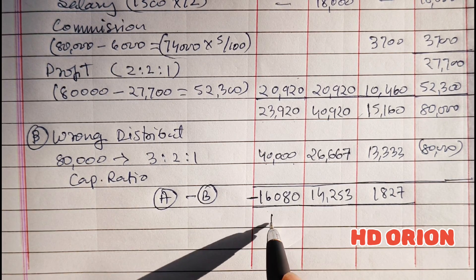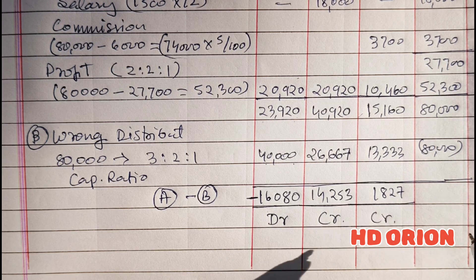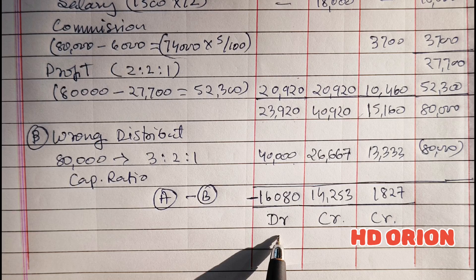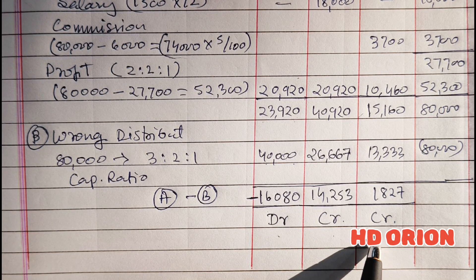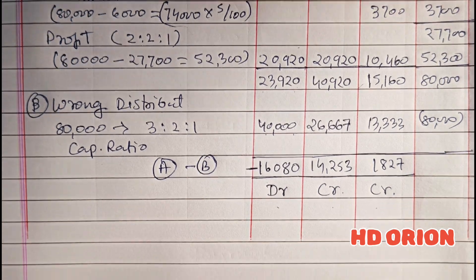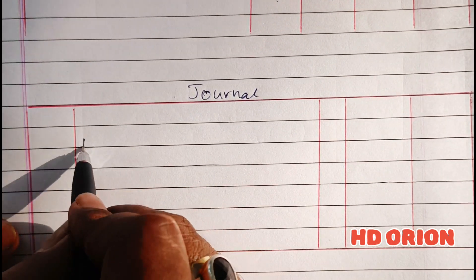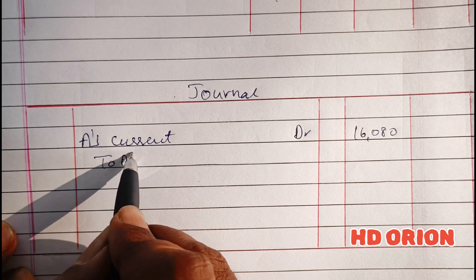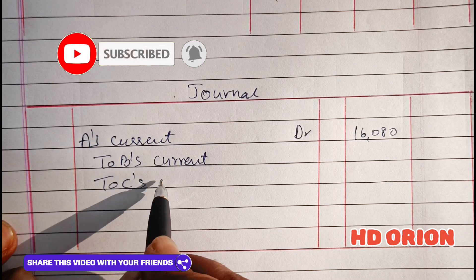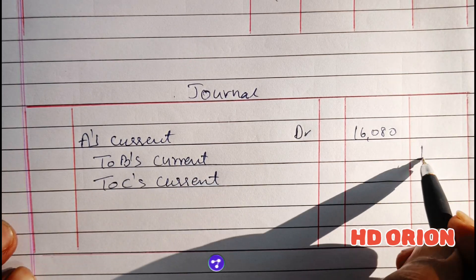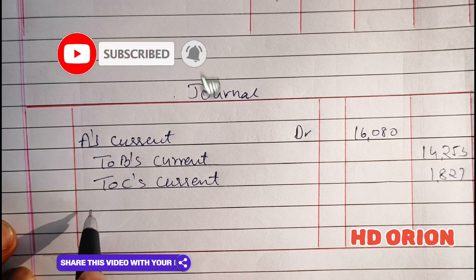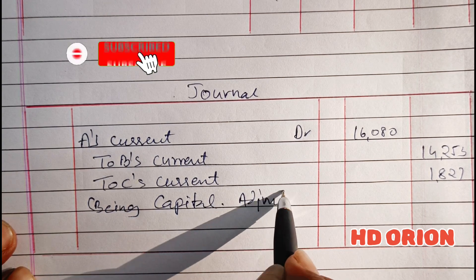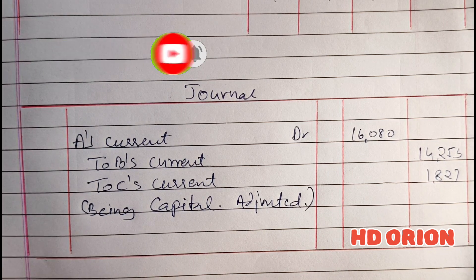Whenever the amount is in negative, the account is to be debited; positive amounts are to be credited. So A's current account will be debited and B and C's current accounts will be credited. Why current account? Because the capital accounts are fixed. The journal entry is: A's current account debited with Rs. 16,080, to B's current account Rs. 14,253 and to C's current account Rs. 1,827, being capital accounts adjusted.